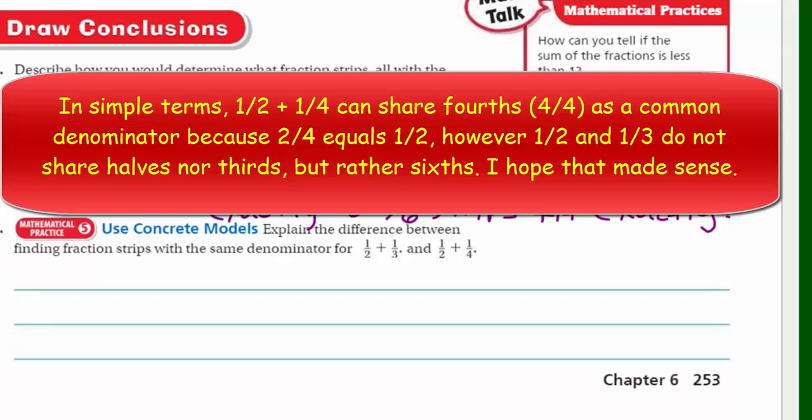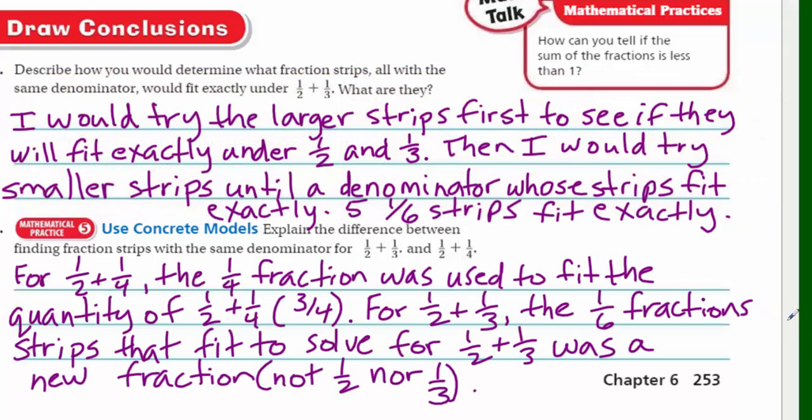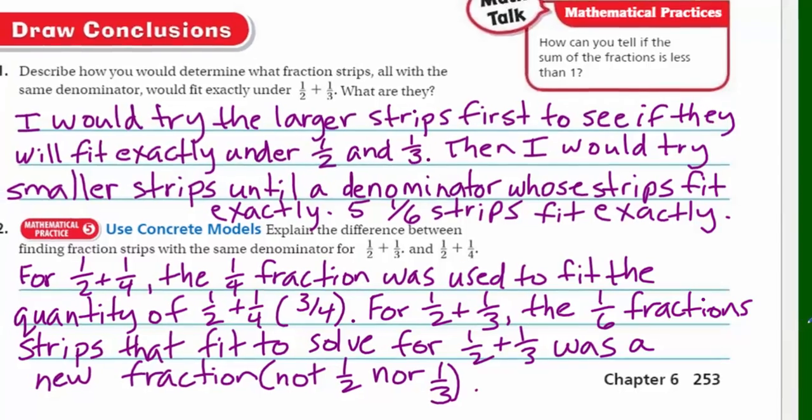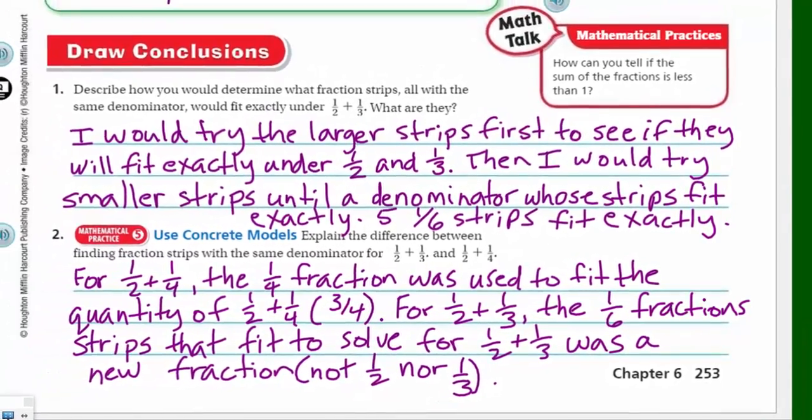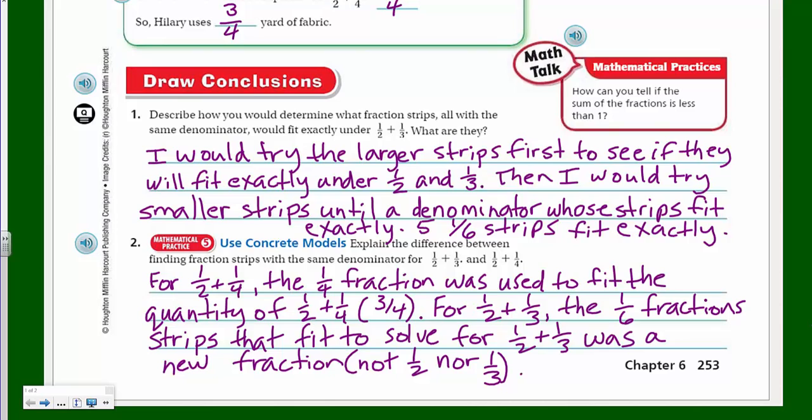If you were to take one-half and one-quarter, which is what we had in the problem above, the one-quarter fraction strips that fit exactly for that addition problem have the same denominator as the one that's given there, which is the one-quarter. Because it's one-quarter plus one-quarter plus one-quarter. The one-half plus one-third, there you don't have a half or a third. We had to have a whole new denominator. So in that case, the one-sixth fractions strips that fit exactly didn't have one of the fractions listed. It wasn't one-half or one-third. So let me write that idea down.